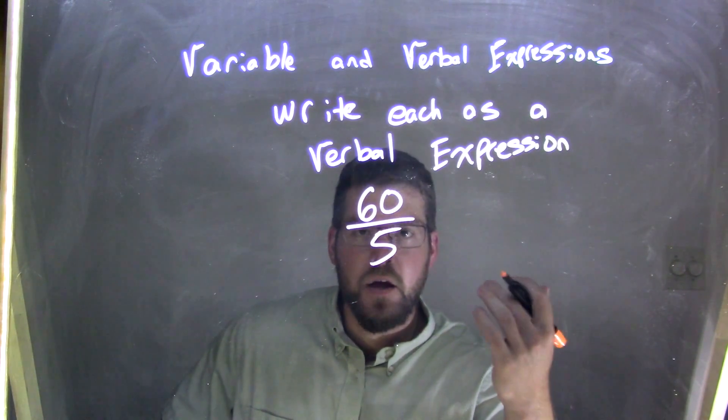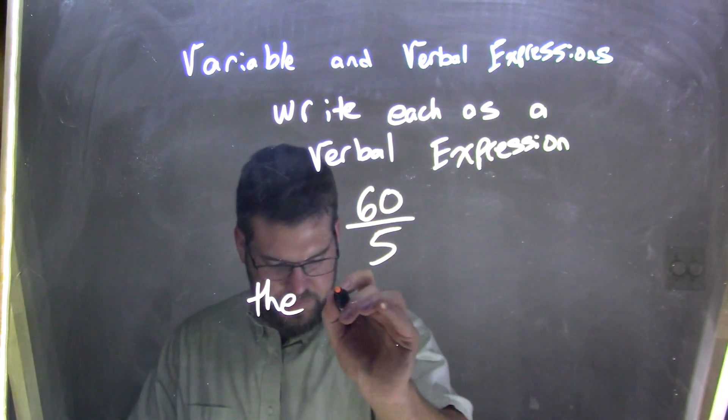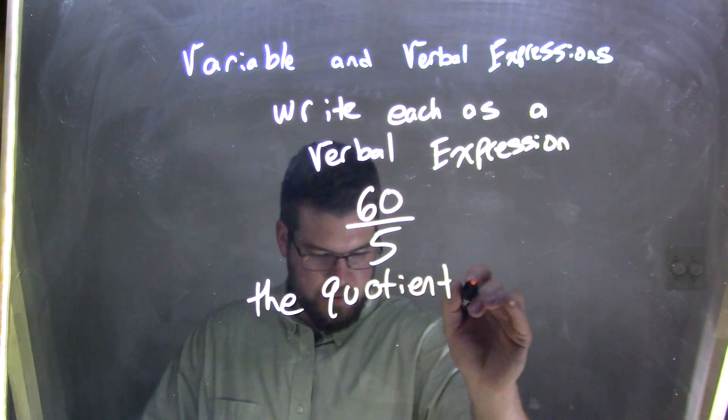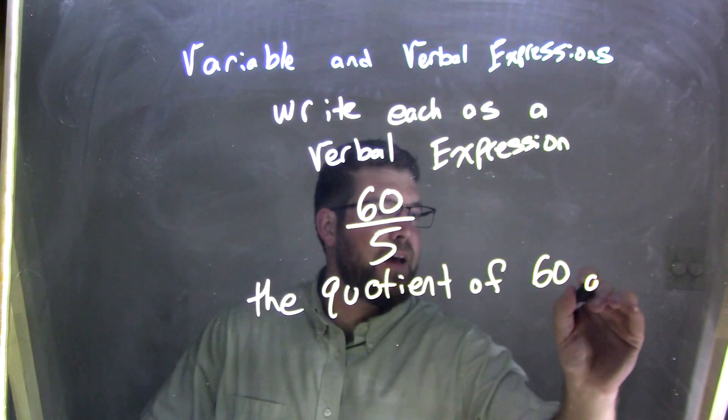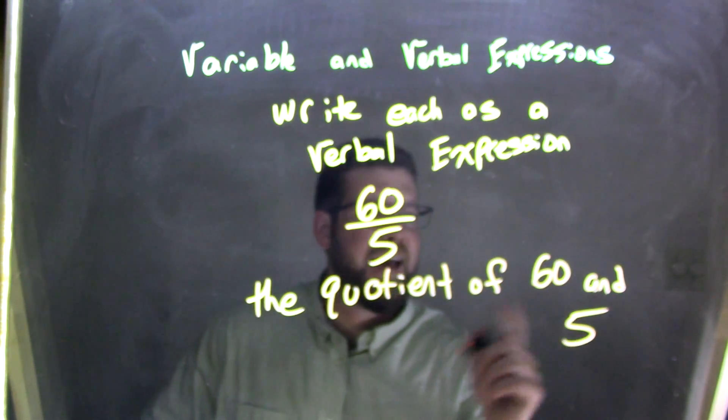The quotient, right. Quotient meaning division. Okay, so the quotient of 60 and, right down here, 5. The quotient of 60 and 5.